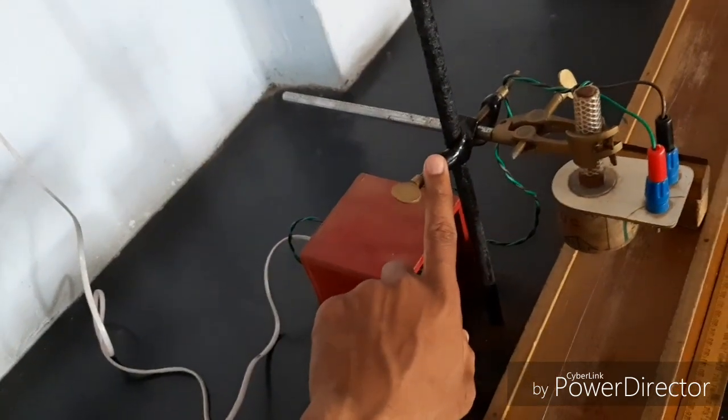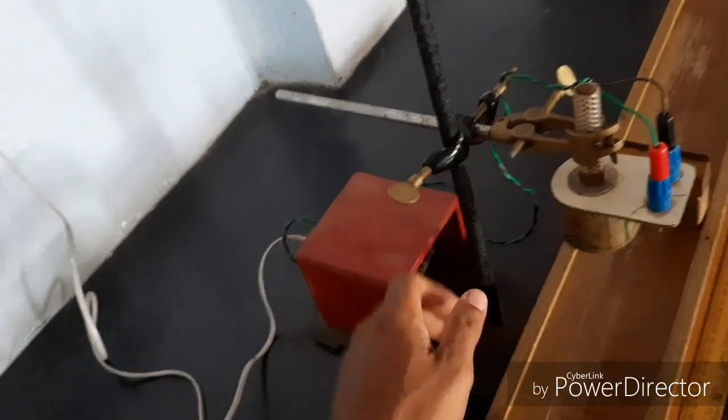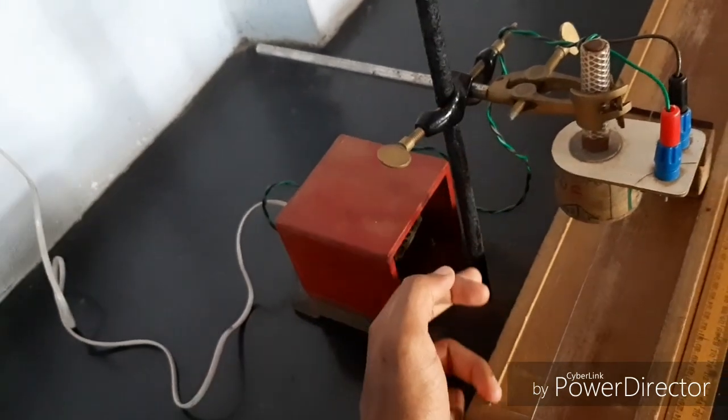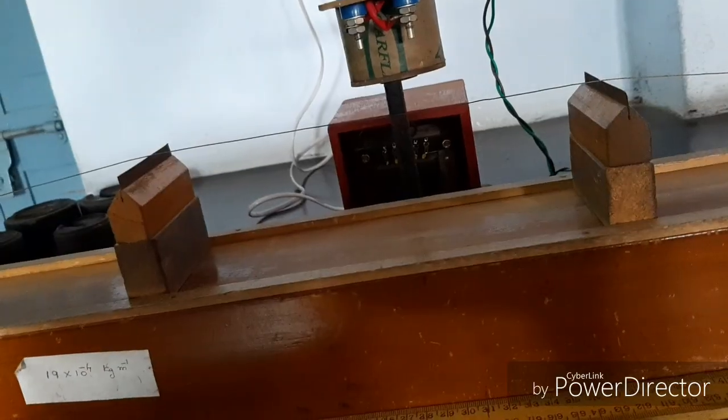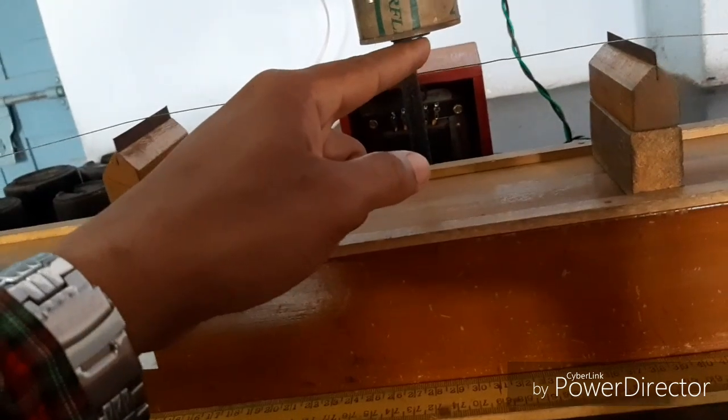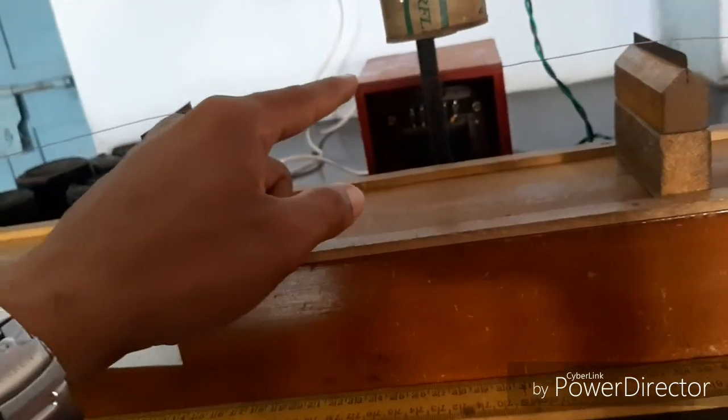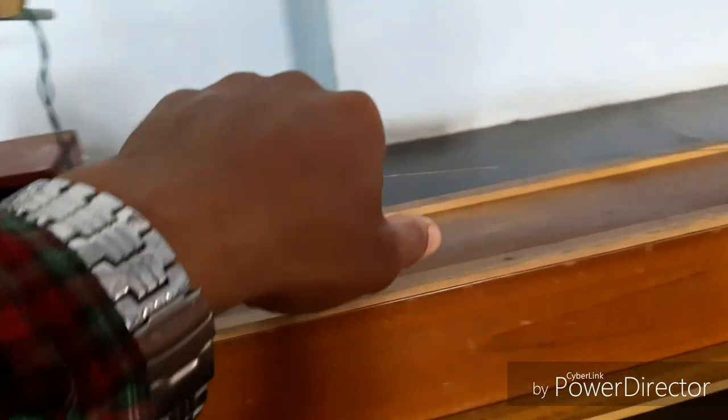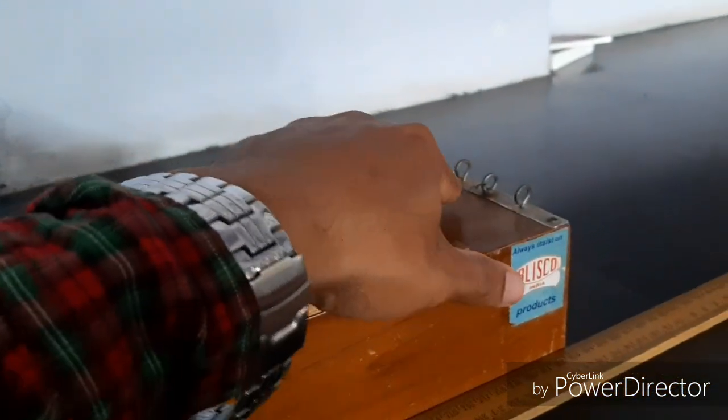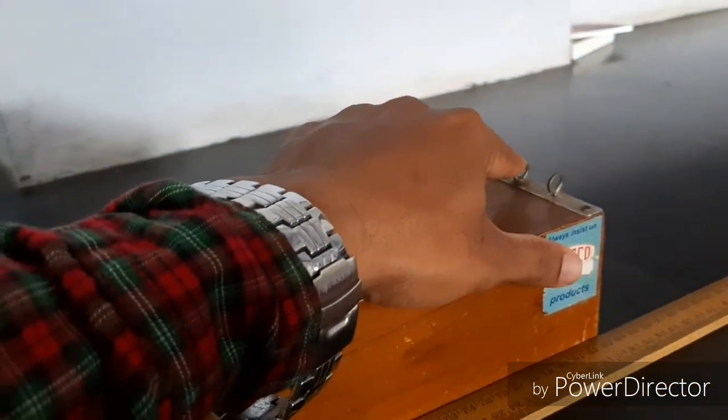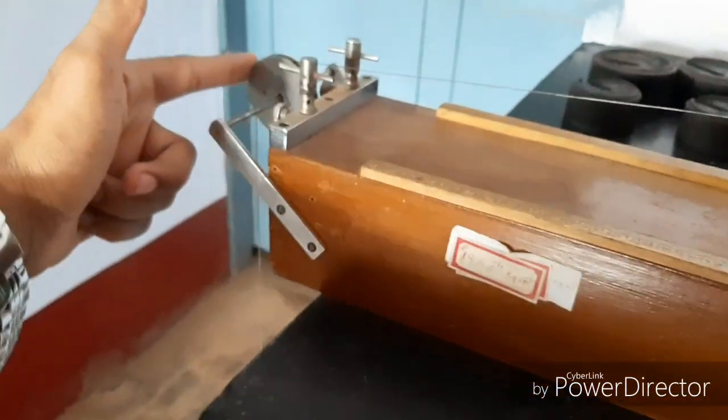Using this clamp stand you can adjust this height. Exactly below this electromagnet, sonometer wire is placed. One end of the sonometer wire is connected to this sonometer box and the other end is connected with the help of this pulley to the weight hanger.